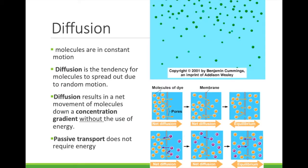All molecules are in constant motion. This constant random motion causes molecules to bump into each other and then spread apart. Diffusion is this tendency of molecules to spread apart. When molecules are clumped up in one place, they will eventually spread out.